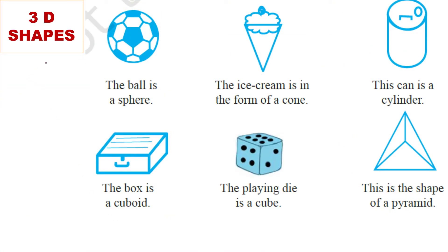Next है आपका 3D shapes। The ball is sphere — yes, it is sphere and it belongs to 3D shapes। Ice cream — this is the cone. So यह cone भी आपका 3D shapes में आता है। Cylinder भी आपका 3D shapes में आ जाएगा। And यह cuboid है आपका — देखिए cuboid की यह length हो जाएगी, यह breadth हो जाएगी, और यह इसकी height हो जाएगी।